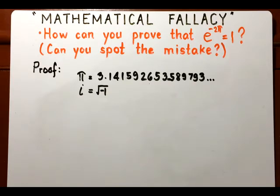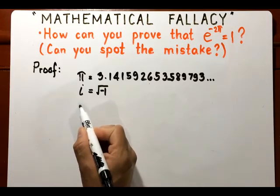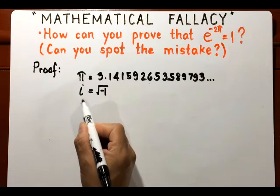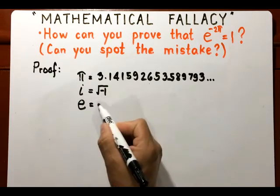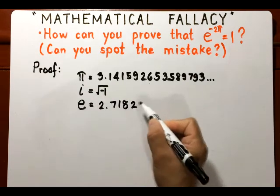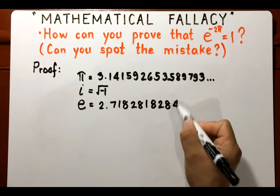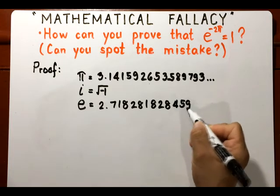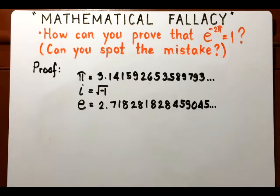When you reach senior high or even in college, you learn another number, another beautiful transcendental number e. This number has a value of 2.718281828459045 and so on and so forth. I don't know what's next, but for sure that's a non-terminating, non-repeating decimal.